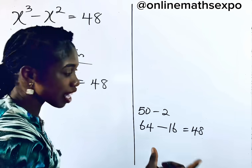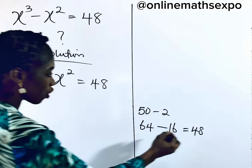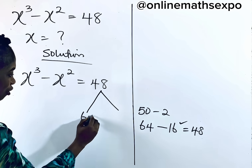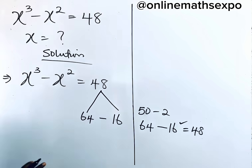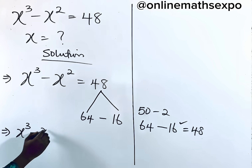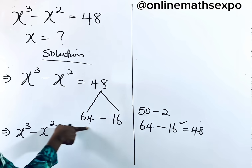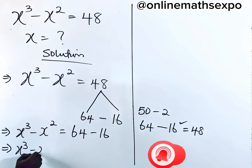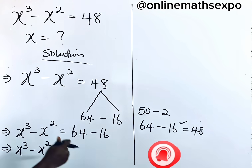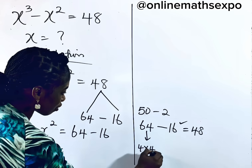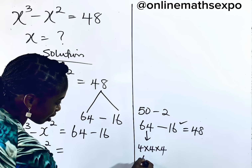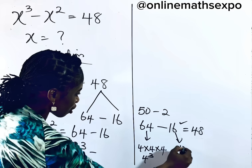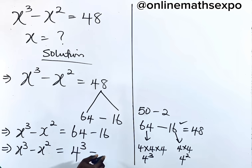We are looking at the value that we will choose, and it will suit what we want to do. So we are going to go for the second statement: 48 is the same thing as 64 take away 16. We can also rewrite this to have x cubed minus x squared is equal to 64, which is 4 multiplied by 4 multiplied by 4 — the same as 4 cubed. And 16 is the same as 4 multiplied by 4, which is 4 squared. So instead of writing 16, we can write 4 squared.